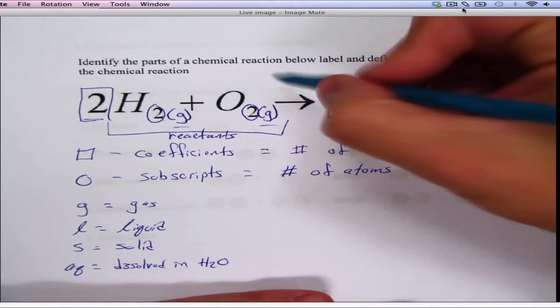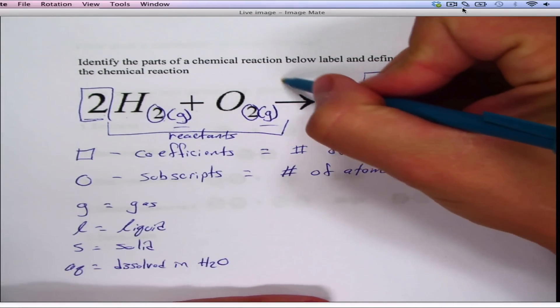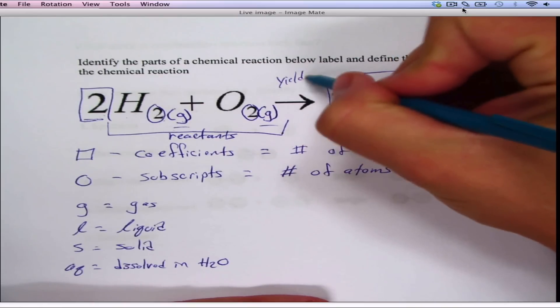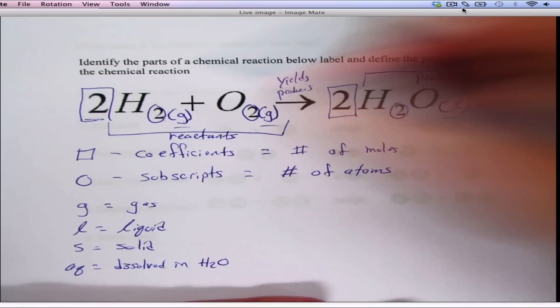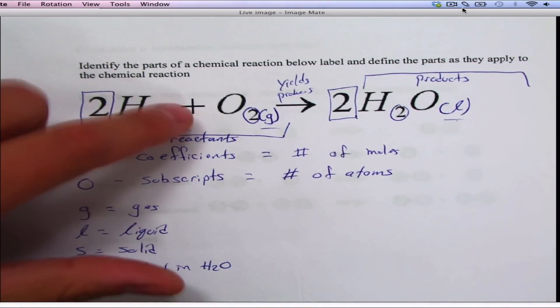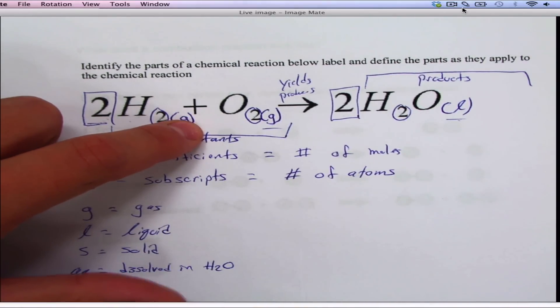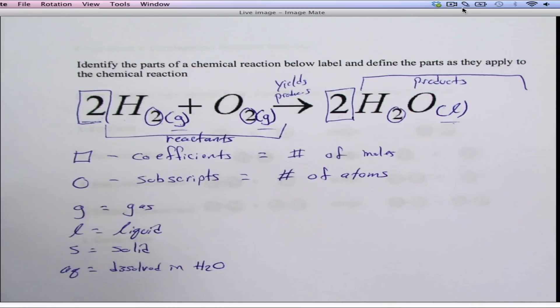Realize that this arrow right here tells you yields or produces, and this plus sign means it reacts with it. If there's a plus sign on this side, that means it also produces another thing.